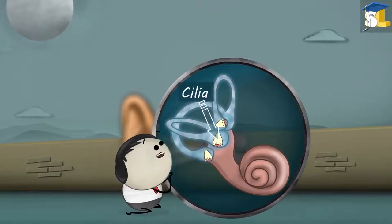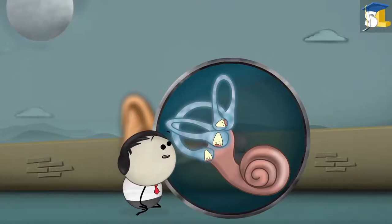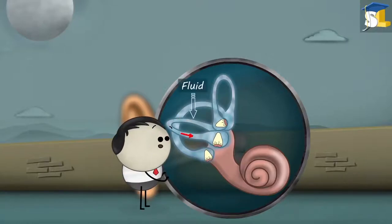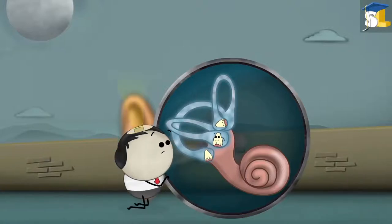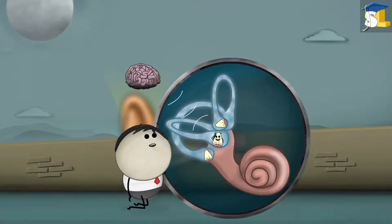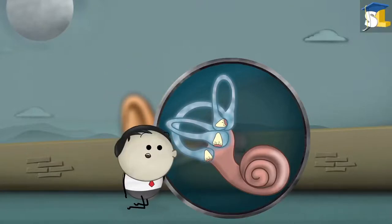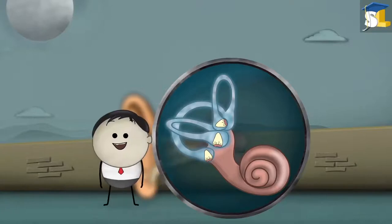And hair cells called cilia at the base. Whenever we move our head, the fluid moves, resulting in the movement of the cilia as well. When the cilia moves, it sends signals to the brain informing which direction our head has just moved in. Each canal has different functions as per the movement of our head.